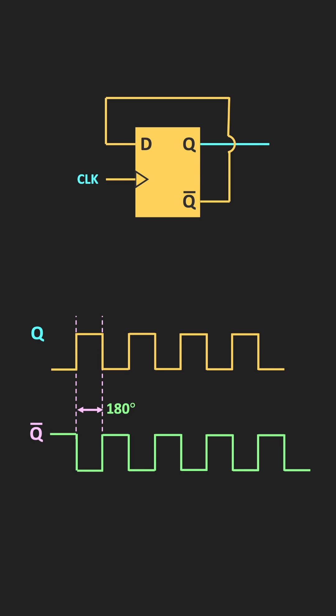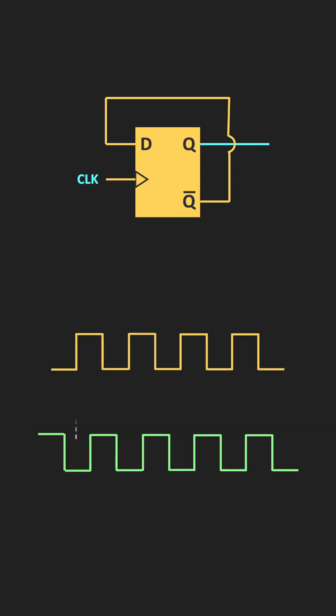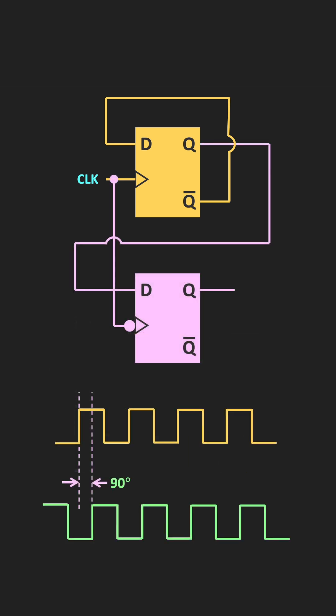Now let us see how, by modifying this circuit, we can generate two signals which are 90-degree phase shifted with respect to each other. For that, we need another flip-flop. But in this case, the second flip-flop should be a negative-edge-triggered flip-flop, and the output of the first flip-flop should be connected to the input of the second flip-flop. With this arrangement, it is possible to generate a second signal which is 90-degree phase shifted with respect to the first signal.